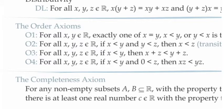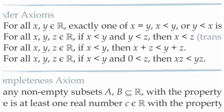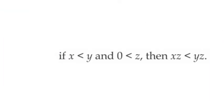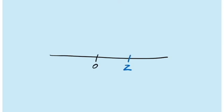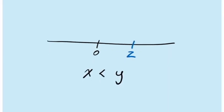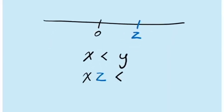The addition axiom is fairly straightforward. It just says that if you have an inequality, you can add whatever number you want to both sides of that inequality. The multiplication axiom is a little bit more complicated. It tells us that if we want to multiply a number on both sides of an inequality, we have to be sure that the number we're multiplying by is greater than 0. In other words, if we think of a number line, the numbers that fall to the right of 0 are the numbers open to being multiplied on both sides of an inequality, and if we do this multiplication, the direction of the inequality remains unchanged.